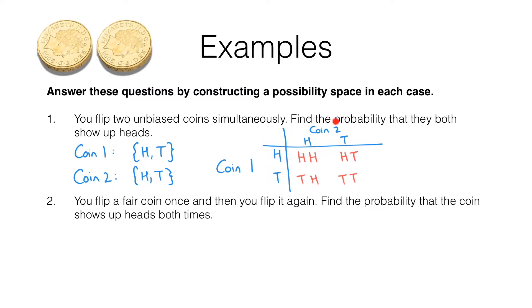So what is the probability that they both show up heads? Well, there are four equally likely outcomes here and only one of them involves both coins showing up heads. So the answer is: the probability that they both show up heads is one quarter.